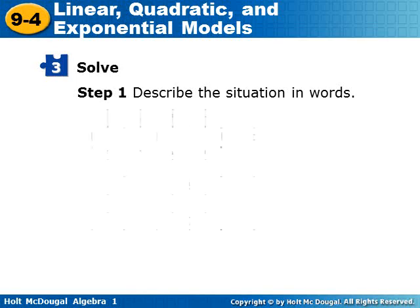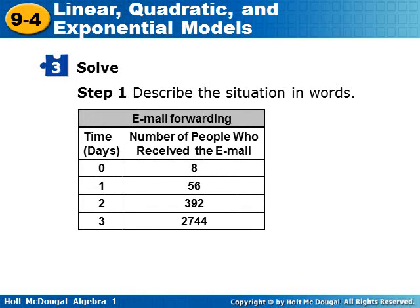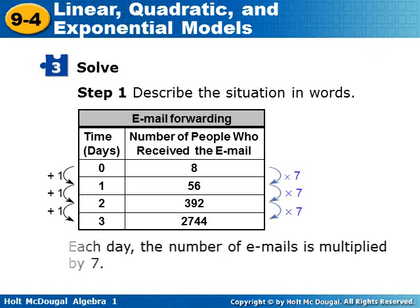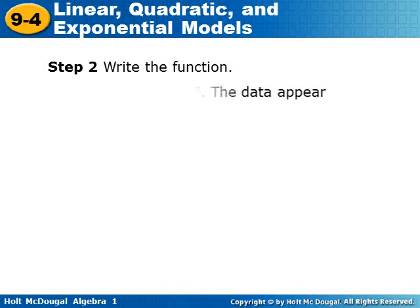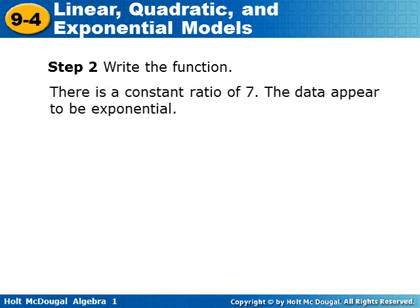Step one: describe the situation in words. The data shows zero days = 8 emails, one day = 56, two days = 392, and three days = 2,744. There's a constant change in x of plus one every time, and the pattern is times seven each time for the email count. Each day, the number of emails is multiplied by seven. There's a constant ratio of seven, so the data appears to be exponential.